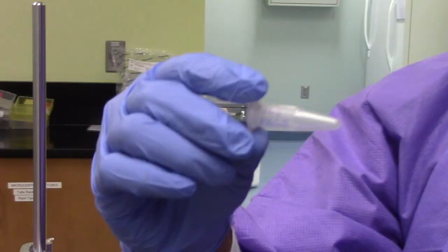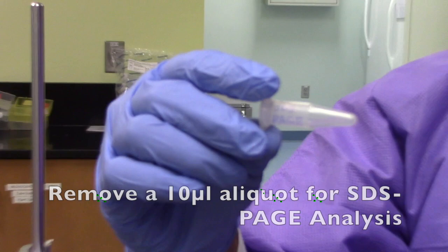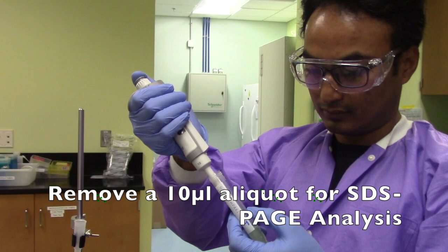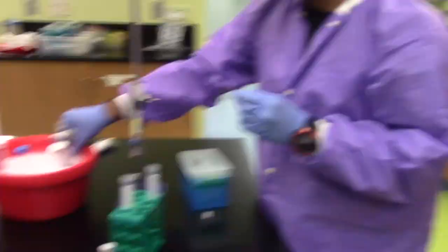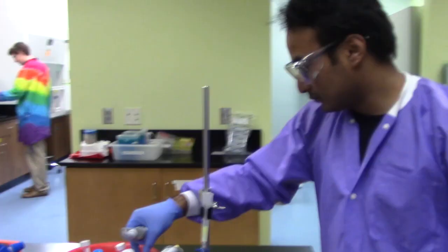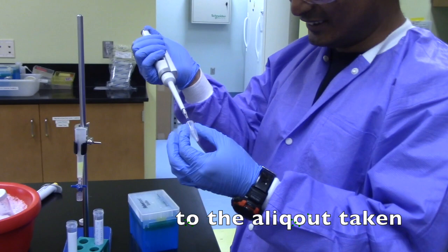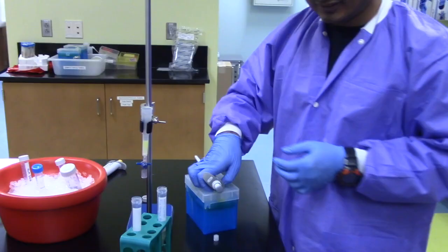Remove a 10 microliter aliquot for SDS page analysis. Add 10 microliters of 2-fold SDS page sample buffer to the aliquot taken. Collect 50 microliters for fluorescence analysis.